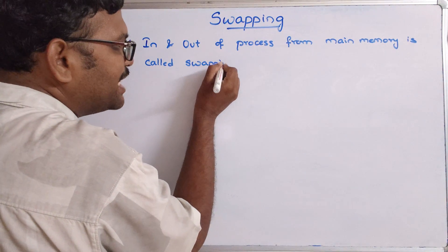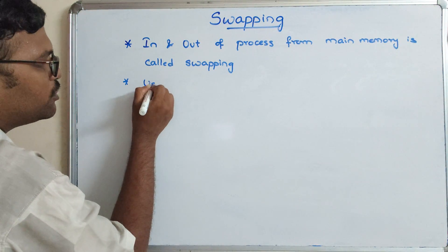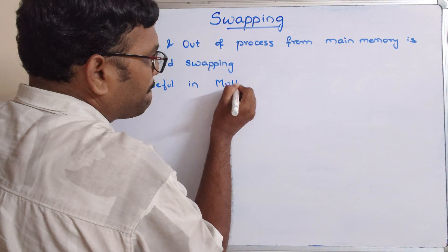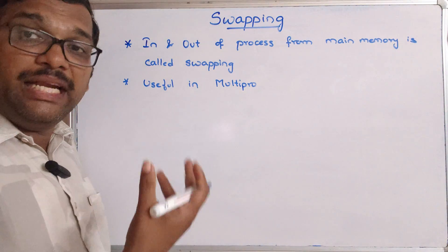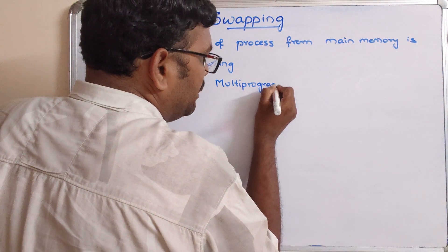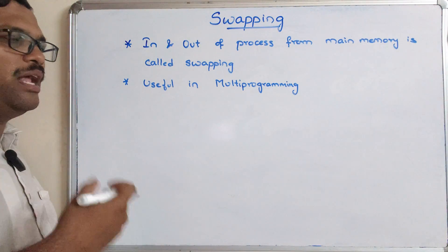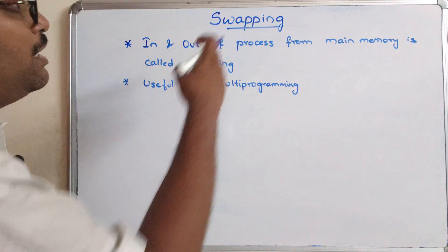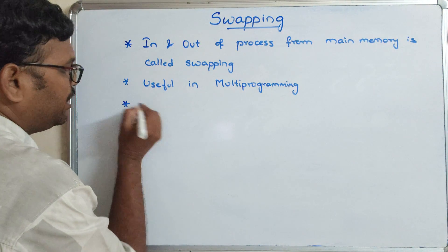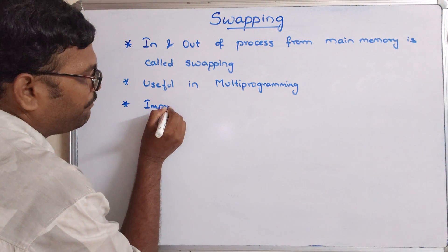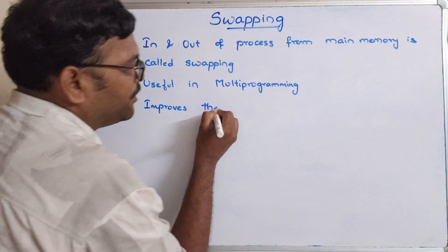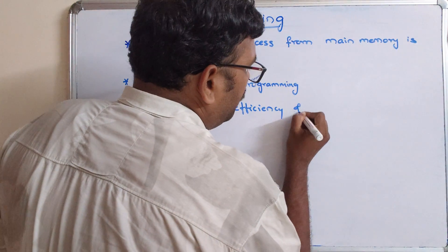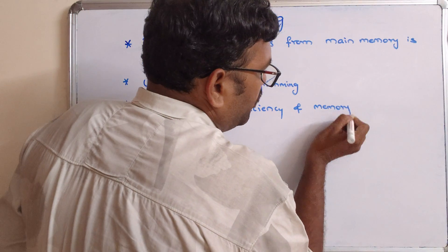So where is swapping exactly useful? Swapping is useful in multiprogramming — whenever we want to execute multiple processes. In the concept of multiprogramming, swapping improves the efficiency of memory management.